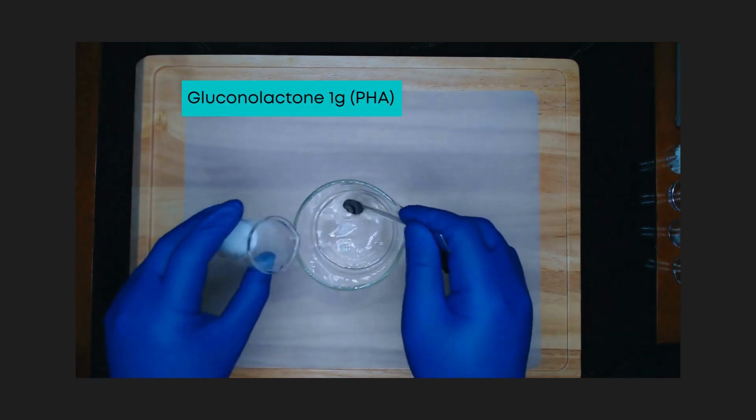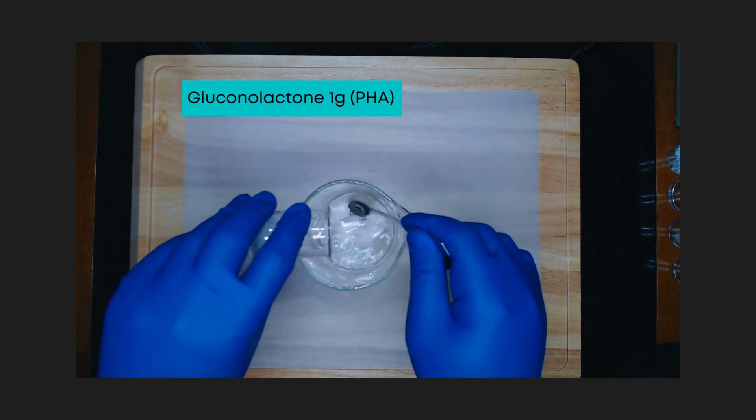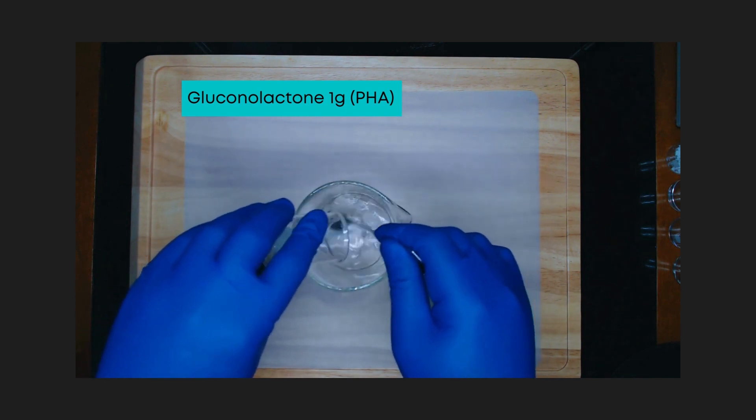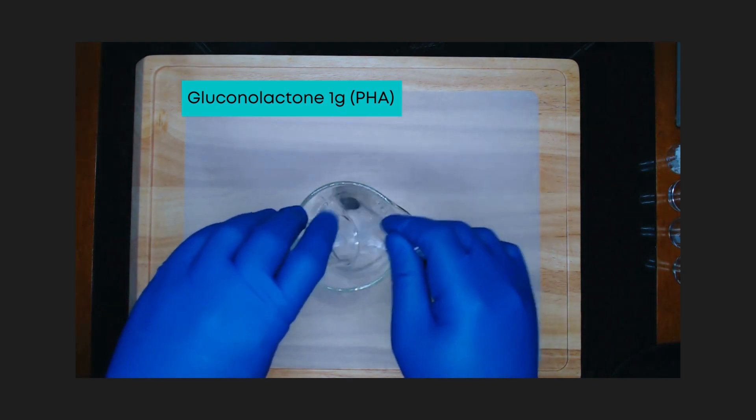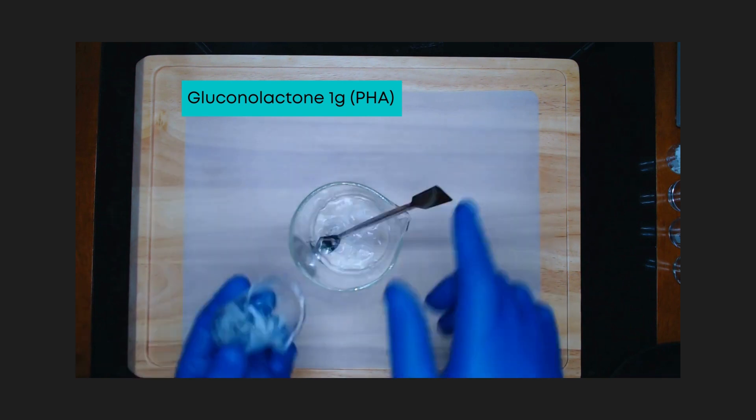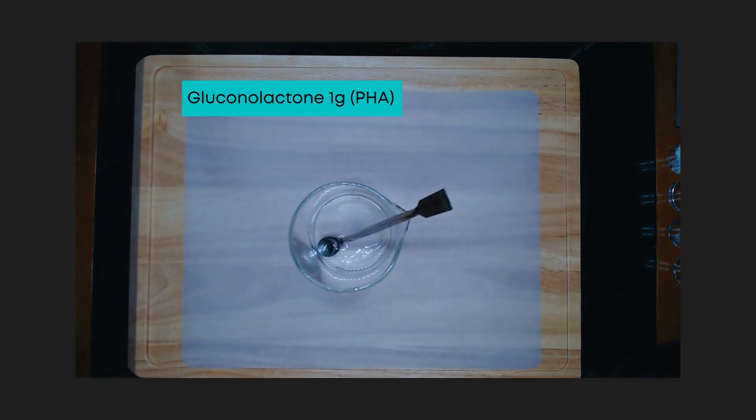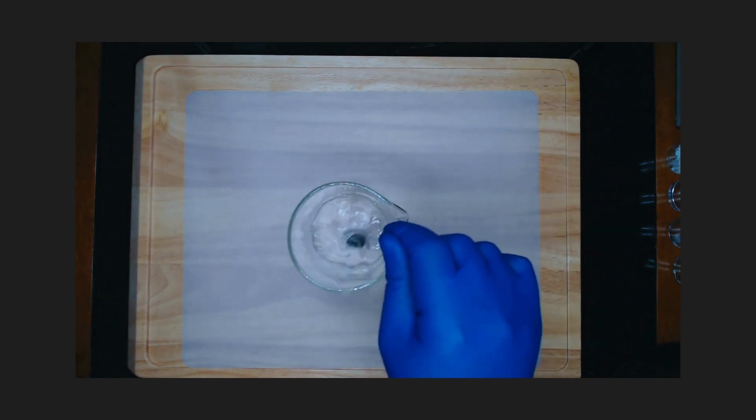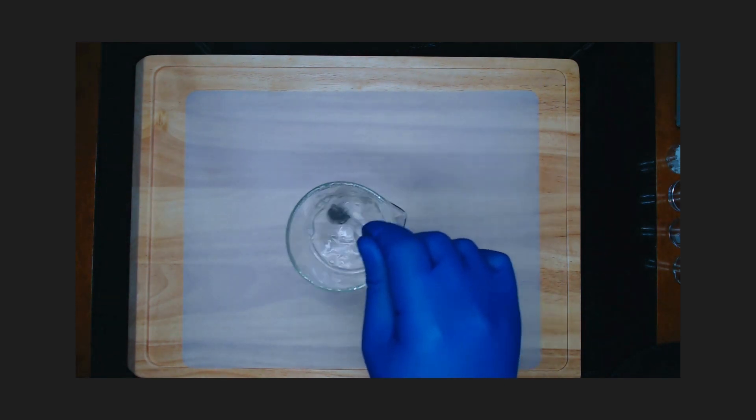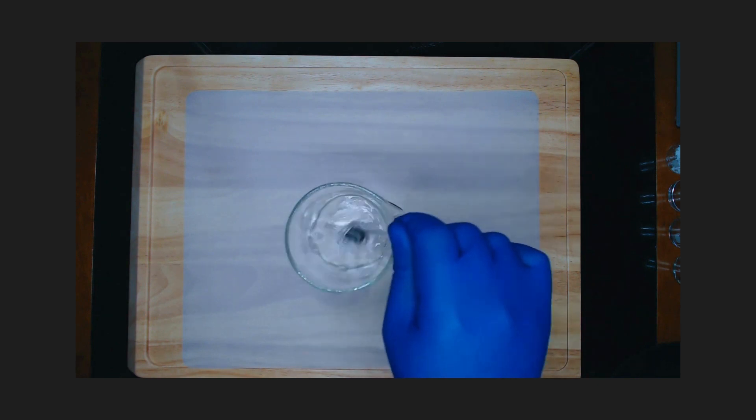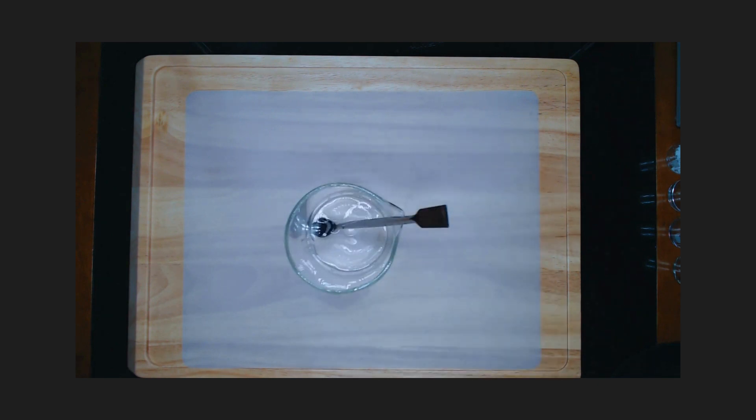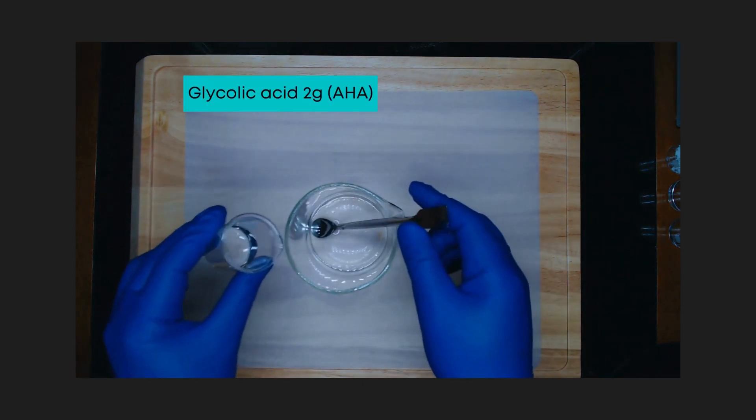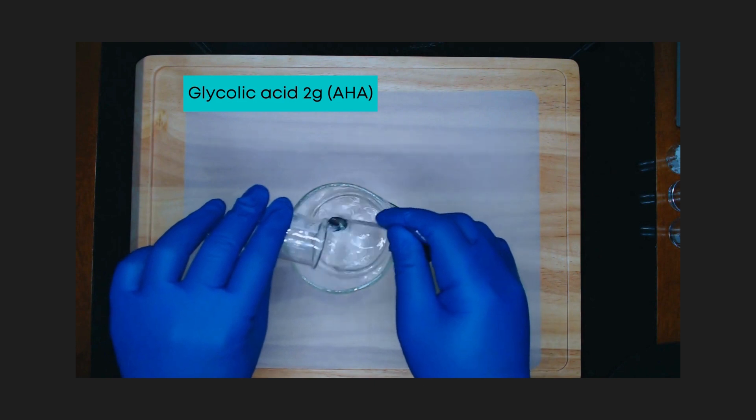Now, we are going to be adding our active ingredients, starting with glucanolactone which is a polyhydroxy acid. Add glycolic acid, which is an alpha hydroxy acid.